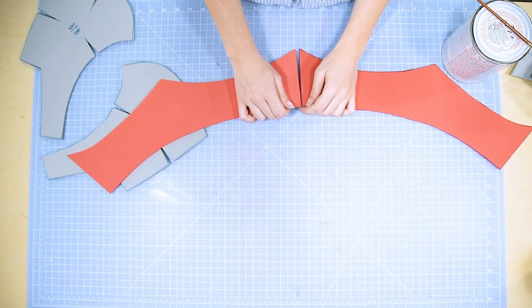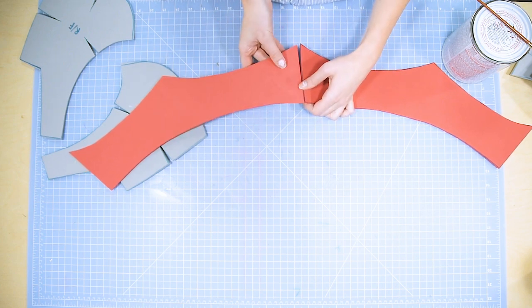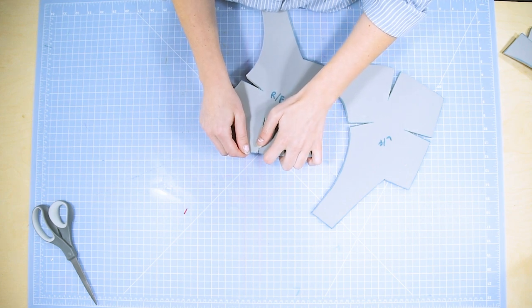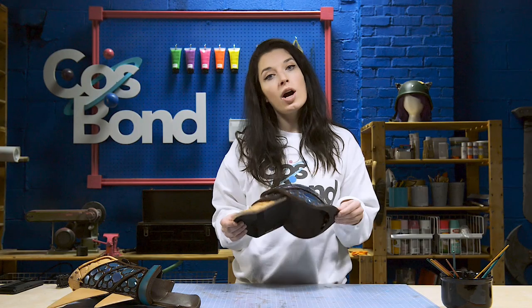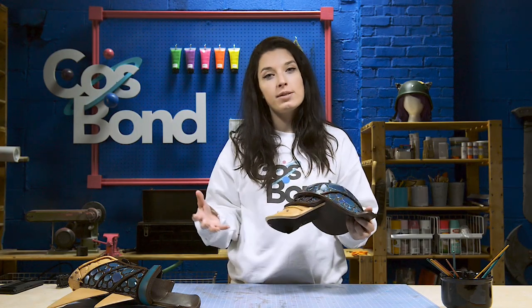Once the contact cement is tacky to the touch, you can start guiding your edges together with your finger. When your contact cement is dried, you can use a heat gun to make your pieces more round.